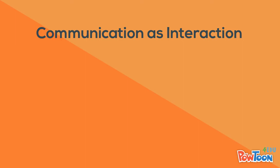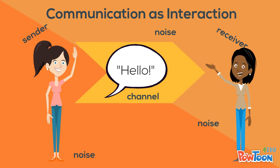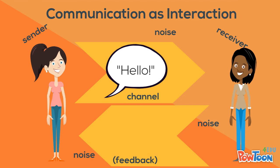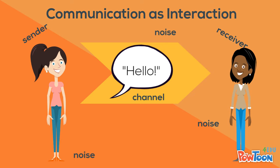The second communication model is communication as interaction. This is turn-taking communication, or message exchange. The sender sends a message to the receiver via a channel, and again there is noise. The difference here is that the receiver sends feedback to the sender after receiving the message. Feedback is simply the response to the original message. Messages and feedback are being sent like they would be through IM, one at a time.